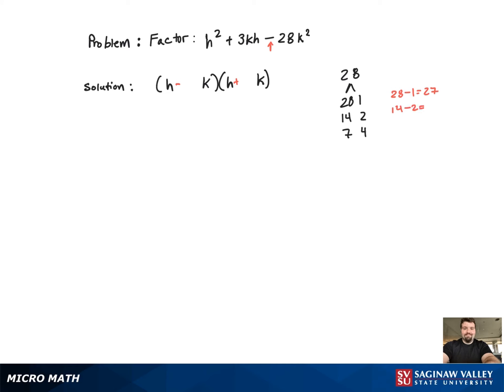The first one has a difference of 27, the next pair has a difference of 12, and the third one has a difference of 3. So we're going to use the third one.